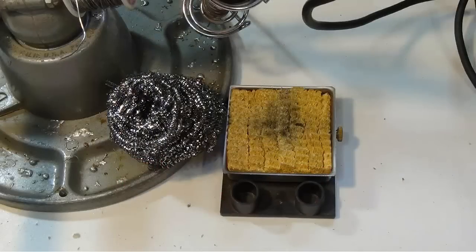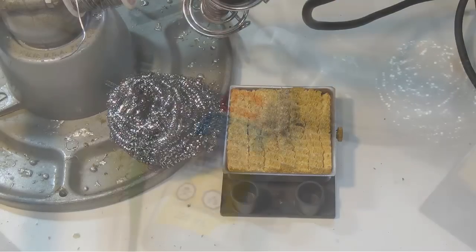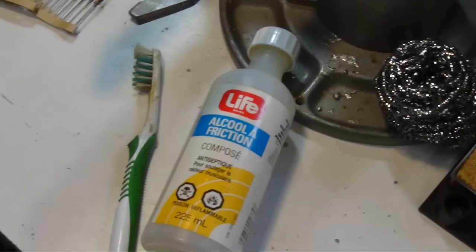You'll also need a damp sponge or stainless steel scouring pad to keep your soldering iron tip clean. To clean the circuit board once you're done soldering, we will use rubbing alcohol and a toothbrush. Make sure the rubbing alcohol is at least 90% pure or better.